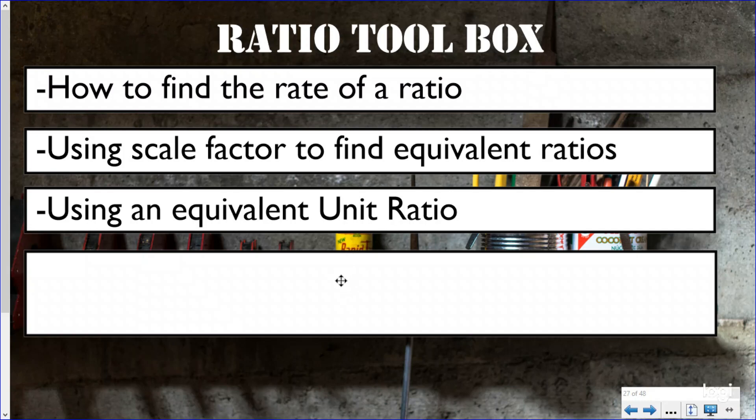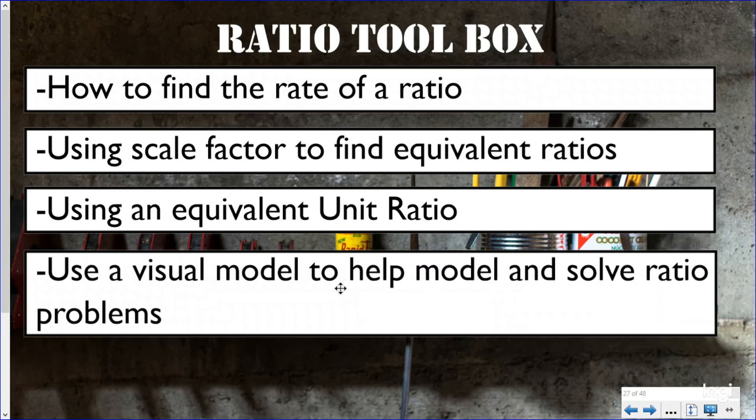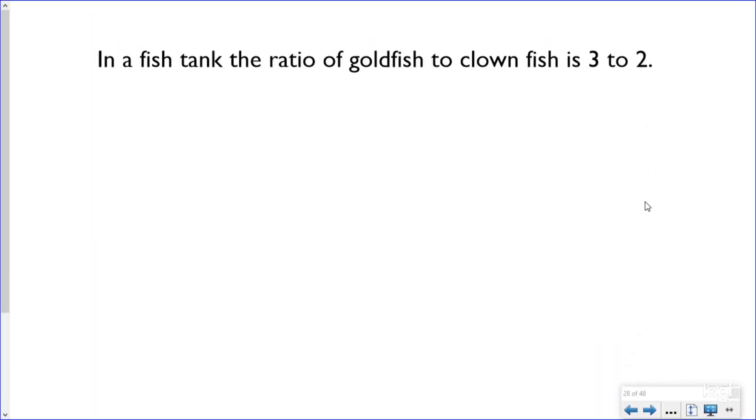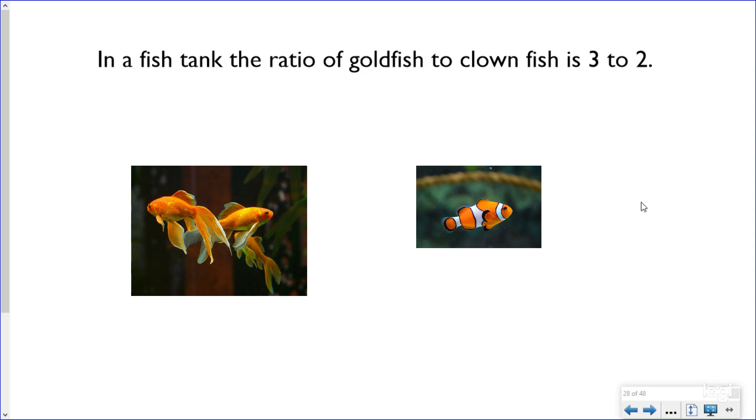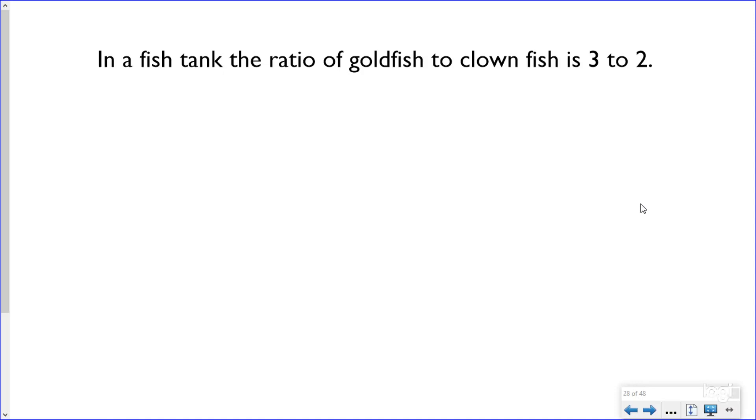Now these are three great tools in our toolbox. Today we want to add another one. We want to add using a visual model to help model and solve ratio problems. So the visual model that Bobby the car mechanic is going to be using today is a tape diagram. So let's find out a little bit more about what this is.